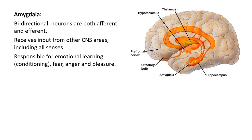The amygdala - right at the bottom - is bidirectional, with both afferent and efferent neurons in and out. The amygdala receives input from other central nervous system areas, including all the senses. What it's thought to be responsible for is emotional learning, sometimes called conditioning - experiencing something and learning an emotion from that, developing emotions in response to something, whether it be fear, anger, or pleasure.